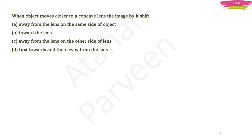Question: When an object moves closer to a concave lens, the image will shift toward the lens — option B. In these types of questions, recall what happens in a concave lens rather than reading through all options repeatedly.